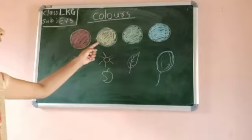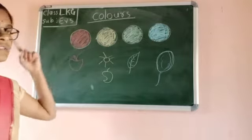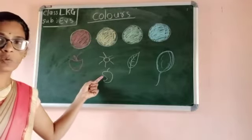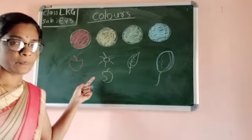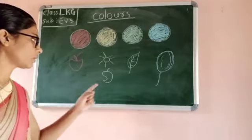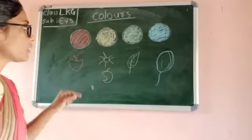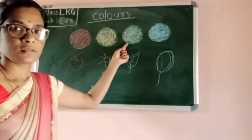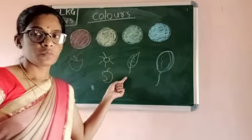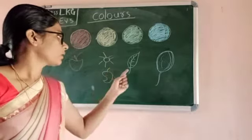Next yellow color. Sun — what is the color of the sun? Yellow. Next, what is this? Mango. What is the color of mango? Yellow. Mango is the king of fruits. Next one — green. This is green color. What is this? Leaf. What color is it? Green color. The leaf is green color.